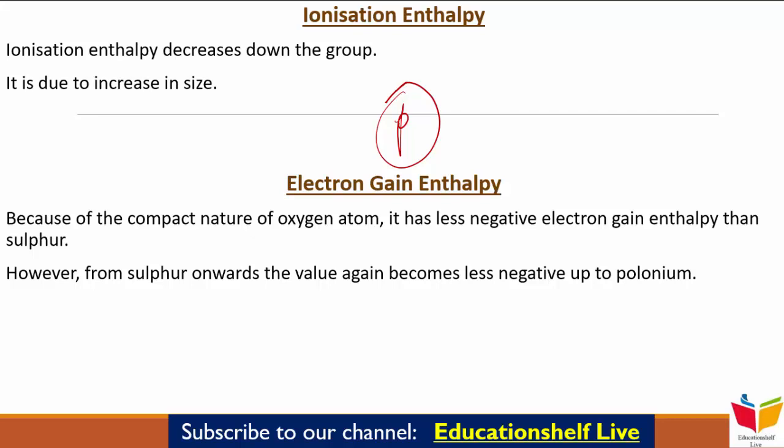Next आता है हमारा Electron Gain Enthalpy। क्योंकि Oxygen atom का compact nature है, इसलिए इसकी Electron Gain Enthalpy, Sulfur की Electron Gain Enthalpy से कम negative होती है। लेकिन अगर हम Sulfur से आगे जाएंगे, तो value Polonium तक जाते-जाते कम हो जाएगी। यानि कि सबसे ज़्यादा Sulfur की दिखाई देगी।